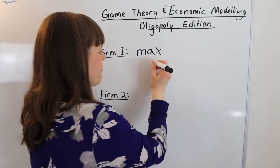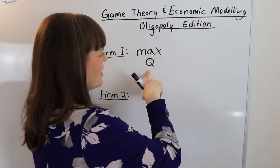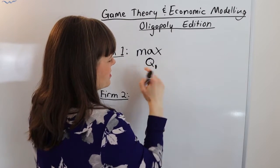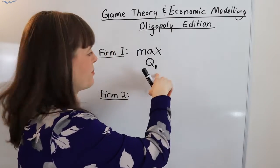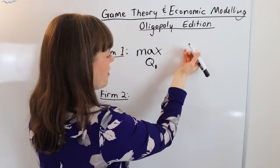Now to keep it simple for this video I'm just going to let each firm choose the quantity that they are going to produce. That's the simplest form of an oligopoly model.